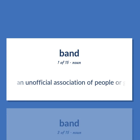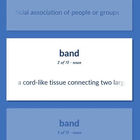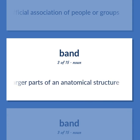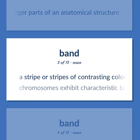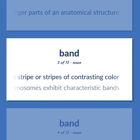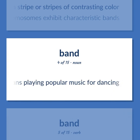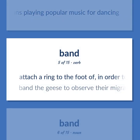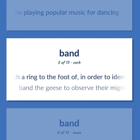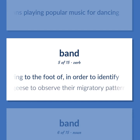An unofficial association of people or groups. A cord-like tissue connecting two larger parts of an anatomical structure. A stripe or stripes of contrasting color. Chromosomes exhibit characteristic bands. A group of musicians playing popular music for dancing. Attach a ring to the foot of, in order to identify. Band the geese to observe their migratory patterns.